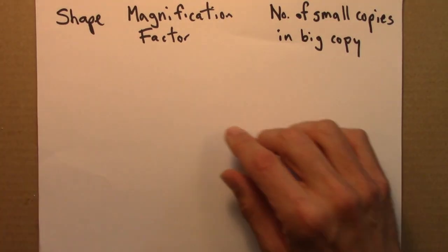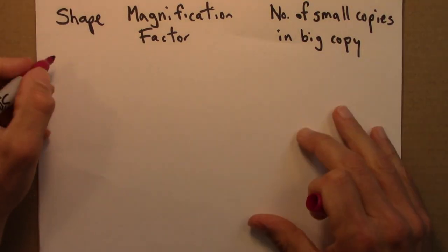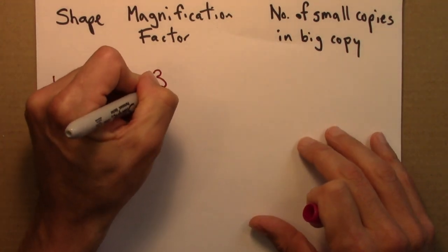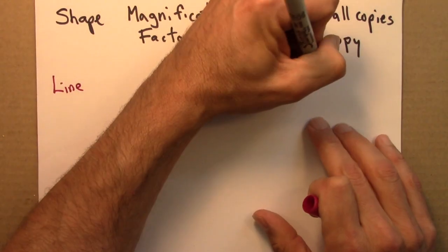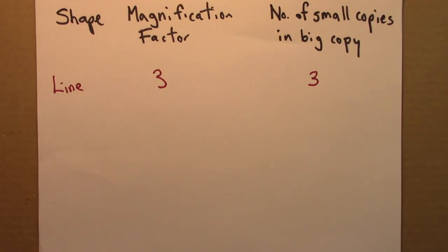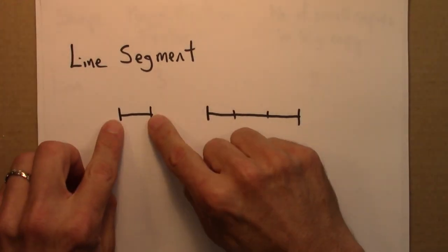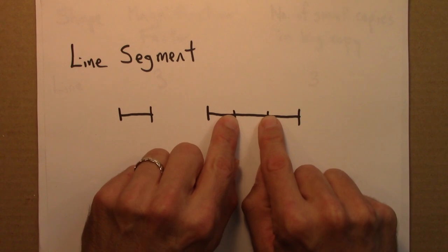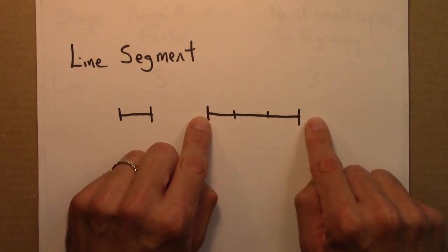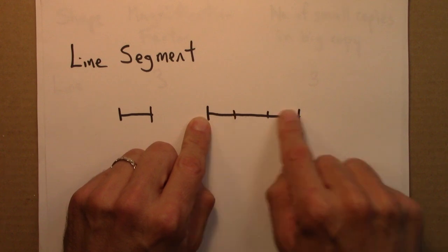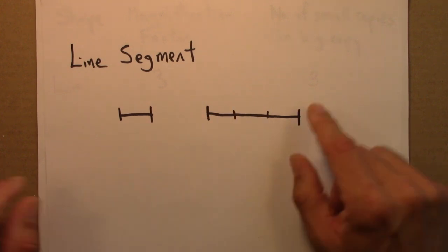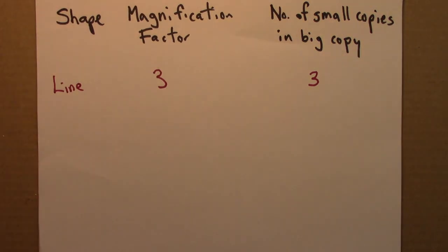So for the shape of a line, magnification factor of three, the number of small copies in a big copy is three. And so what I mean by magnification factor here is that I need to take a small copy and magnify it three times, stretch it three times in this direction in order to have it be the same size as the large shape, this large line segment. Okay, so much for a line segment.